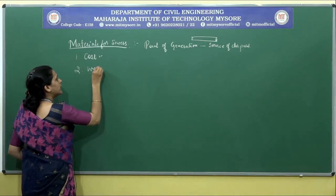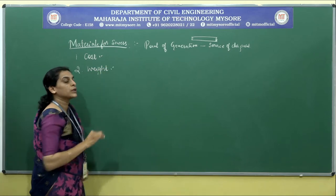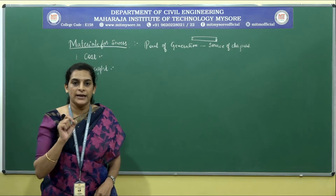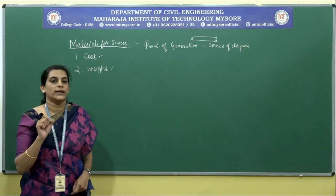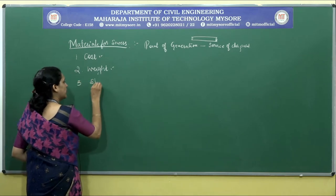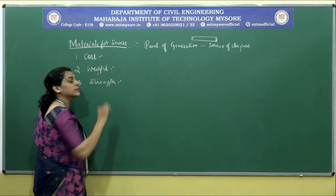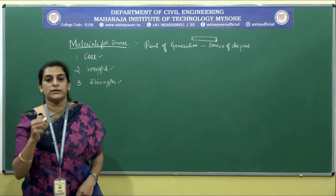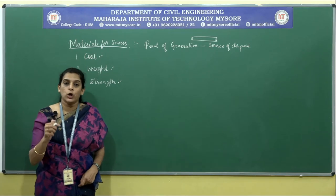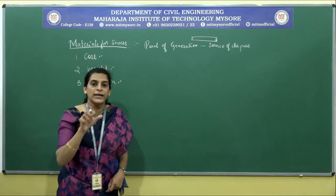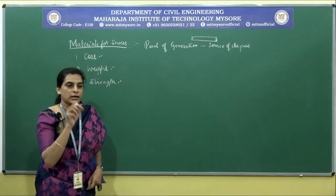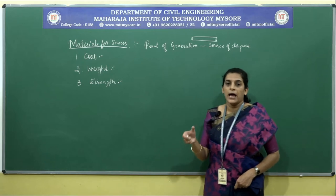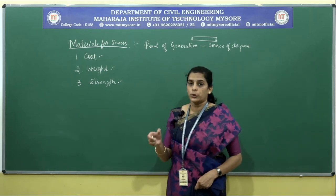Next is the weight of the sewer material. The weight should be such that it does not pose a problem during handling, transportation, or maintenance. The next very important factor is strength. The strength of the sewer material should be sufficient to withstand heavy loads imposed on it — for example, if it is laid below a railway track, that sewer line must bear that load, so the strength should be very high.